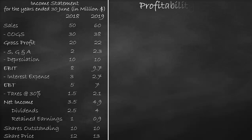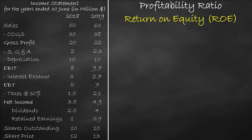Another example of a profitability ratio is the return on equity, or ROE. Return refers to a profit level such as net income or EBIT. The return on equity formula is net income divided by equity.